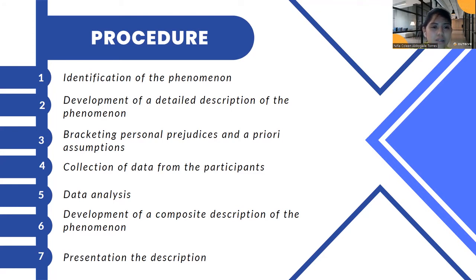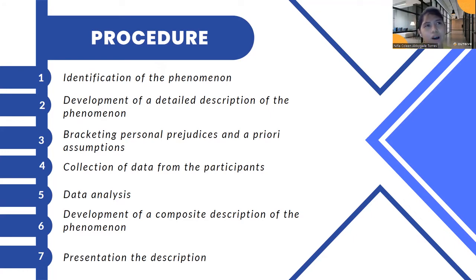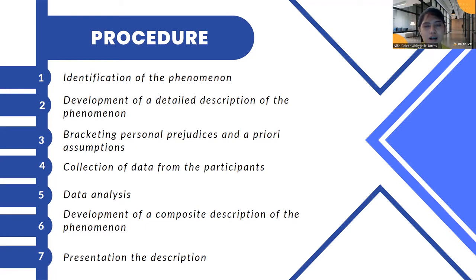Step three is bracketing personal prejudice and a priori assumptions. You have to look into yourself and self-check — identify what your personal prejudices and assumptions are towards the topic and the research you are going to do, in order to call yourself out in case you are being biased. You have to self-check yourself always.